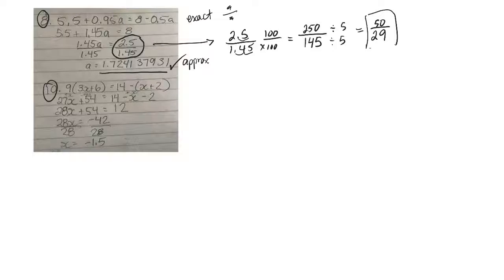So that would be probably what I would say is my exact answer. Now you could write it as a mixed number, divide 29 into 50, it goes once, and then there'd be 21 remaining out of 29, and you keep the same denominator. So you could write it like that too, as a mixed number or as an improper fraction.